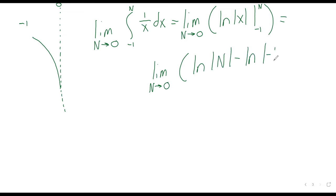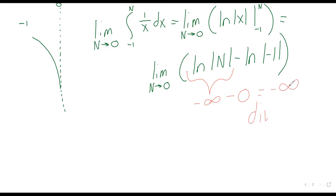Always remember the absolute values. The natural logarithm of negative one isn't defined, but the absolute value turns it to positive one. The natural log has a vertical asymptote at zero, so that thing is going to negative infinity. Negative infinity minus any number is still negative infinity, so this integral diverges.